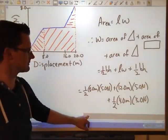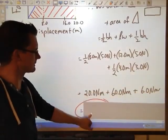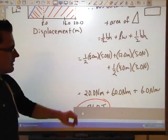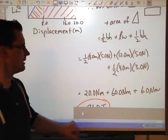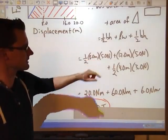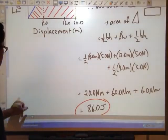And then lastly, a half of the base times the height. This position here is 16. That's 20. So this is a difference of 4.0 meters. What I have there. And going from 5 to 8, that's a difference of 3. So 3.0 newtons.